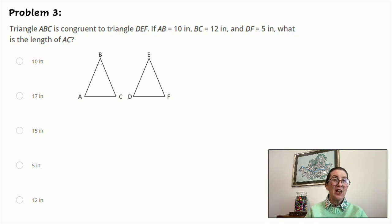Problem number three. Triangle ABC is congruent to triangle DEF. If AB is equal to 10 inches, BC is equal to 12 inches, and DF is equal to 5 inches, what is the length of AC? 10 inches, 17 inches, 15 inches, 5 inches, or 12 inches?